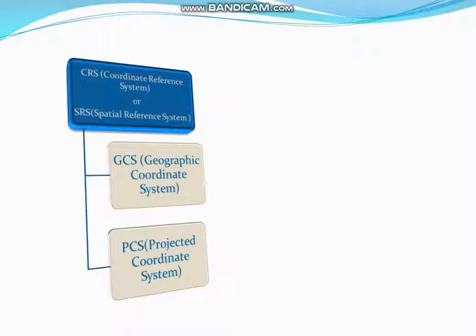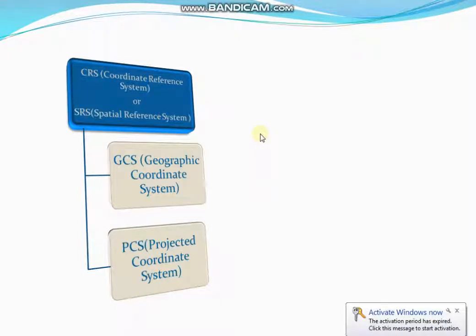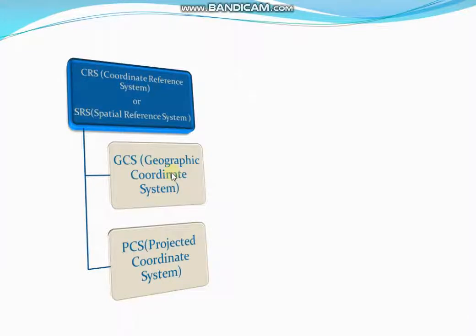Coordinate system is indicated as CRS or SRS. SRS stands for Spatial Reference System and CRS stands for Coordinate Reference System. Both are the same concept — it is a local, regional, or global system used to define geographic entities. A spatial reference system defines a specific map projection as well as the transformation between two different spatial references. There are two types of coordinate system: one is GCS, which stands for Geographic Coordinate System, and another is PCS, Projected Coordinate System.